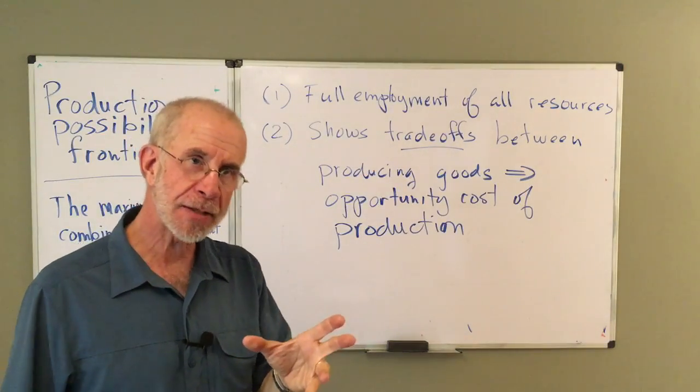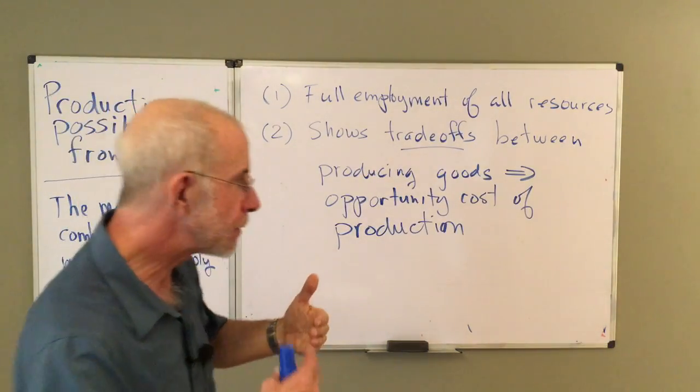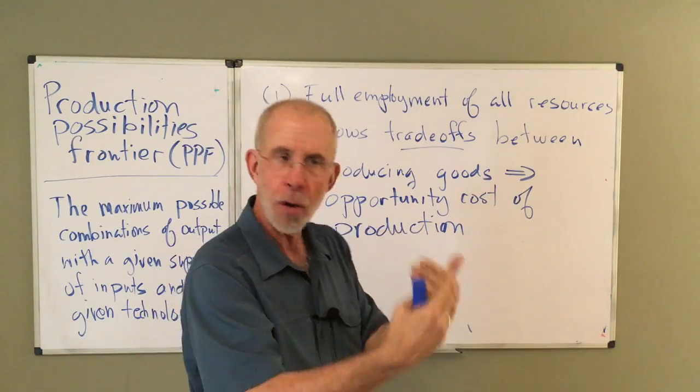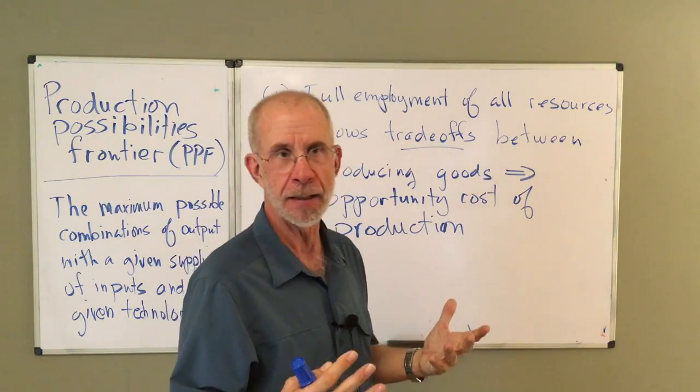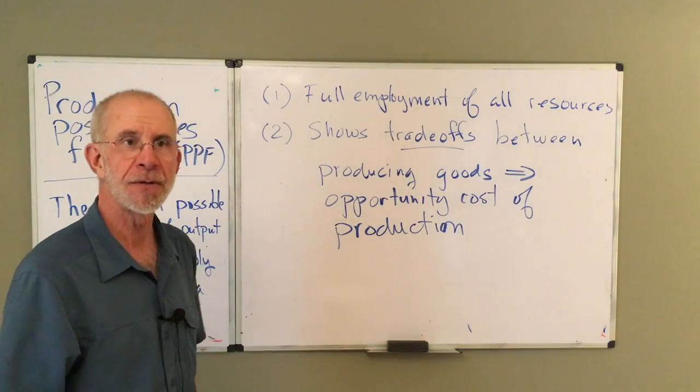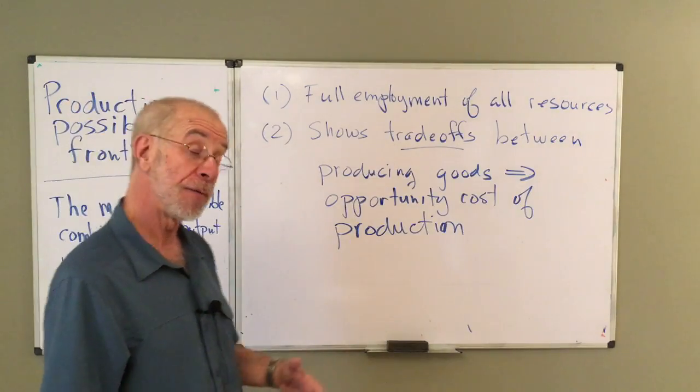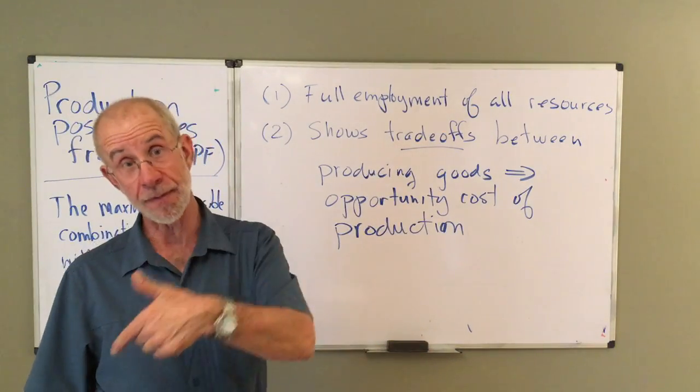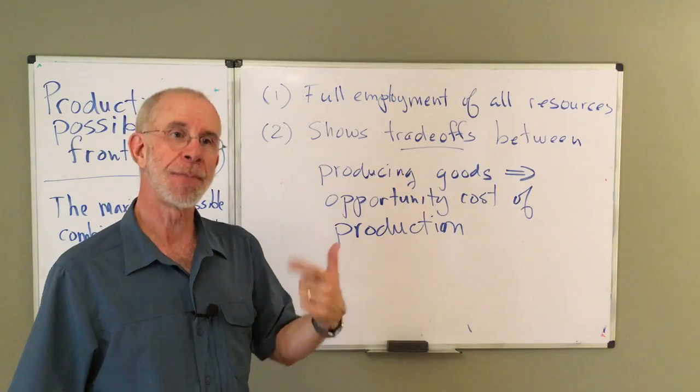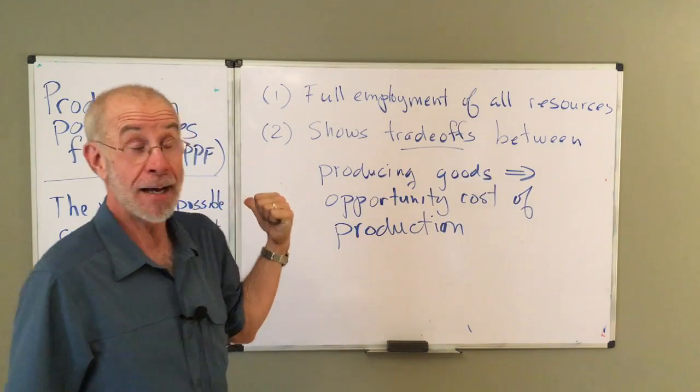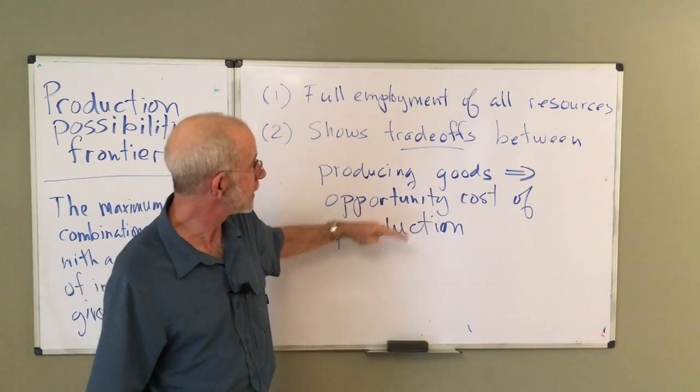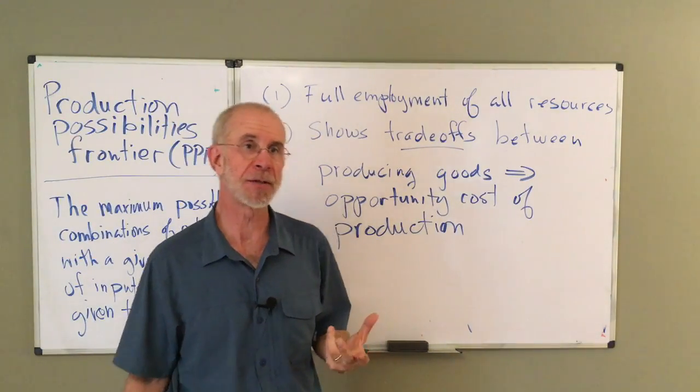But a critical aspect of this is that if you're fully engaged, all of your resources, everybody's being employed, you're really at the most efficient place possible. If you start to want to produce more of another good, then you're going to have to give up the production of something else. It's because you've got to get the resources from someplace, which is going to bring us to this idea of the opportunity cost of production.